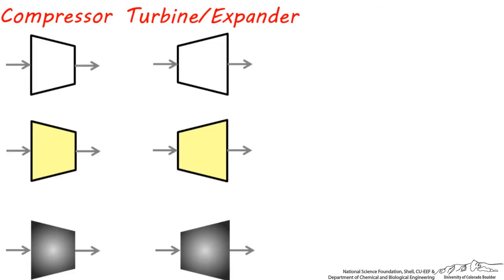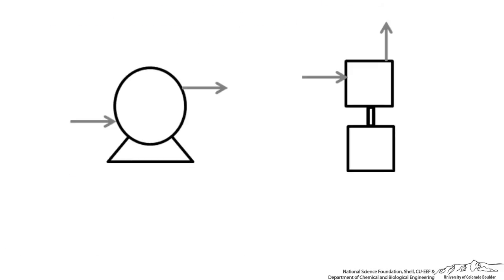Both compressors and turbines have the letter abbreviation C. This is a little counterintuitive for turbines since you expect them to be a letter T, but it's useful to remember that turbines can essentially be thought of as compressors in reverse, so they have the symbol C. These symbols are fairly common on diagrams.